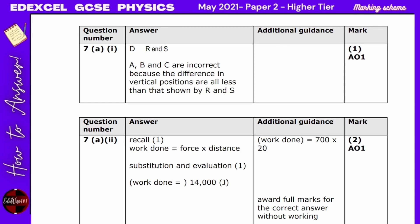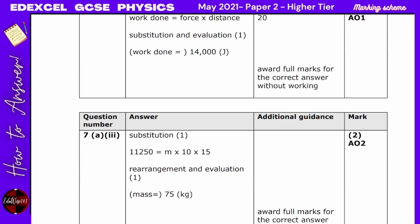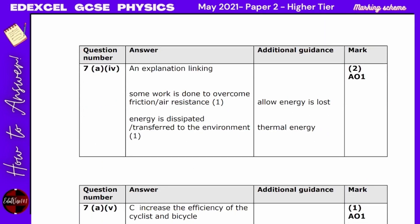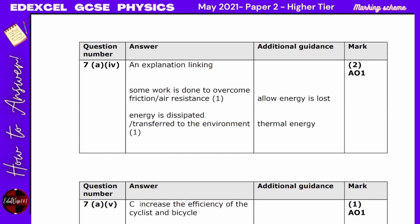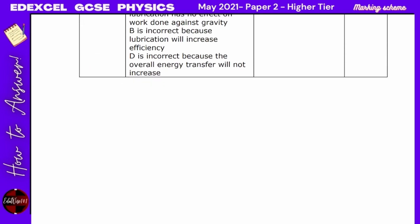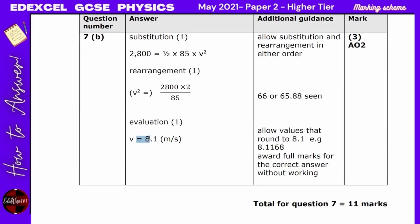For the marking scheme on Question 7: the answer was D; work done was 14,000 J; mass was 75 kg; some work is done to overcome friction or air resistance, and energy is dissipated to the environment as thermal energy; lubricating increases the efficiency of the cyclist and bicycle; the velocity was 8.1 m/s.